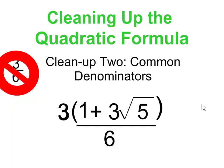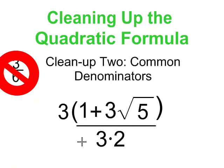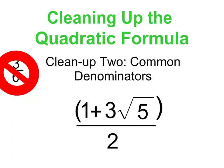There we go. I've factored a 3 out of both terms in the top. Now that I have a 3 factored out of both the top and the bottom, we can cancel them out and go straight to our simplified version of our quadratic formula result, which looks something like that.